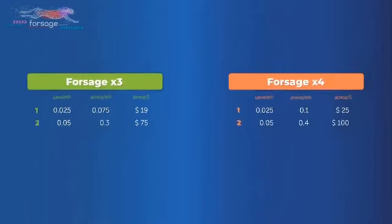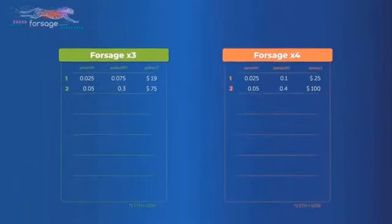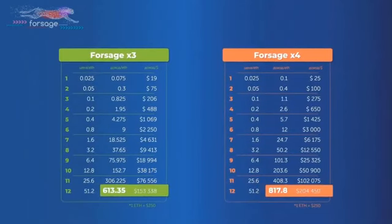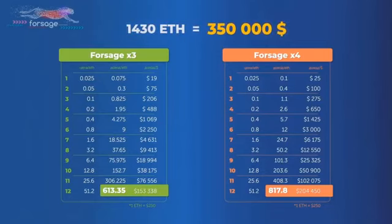If you continue opening up each week a new slot, you'll be able to generate as much as 613.35 Ethereum from Forsage X3 and 817 Ethereum from Forsage X4. That's 1,430 Ethereum. Now, if Ethereum is $250, that is over three hundred and fifty thousand dollars. You get the idea.